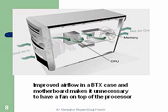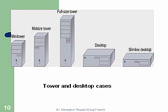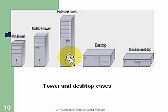Types of cases. The computer case, or chassis, houses the power supply, motherboard, cards, and drives. Panel switches on the front with lights are used to control and monitor the PC. Desktop cases have the motherboard on the bottom and the power supply towards the rear. Tower cases are up to two feet high and can contain several drives. Notebook cases are used for portables and contain desktop components such as a hard drive and CD-ROM. Case sizes include mid-size, full-size, desktop, and slimline.